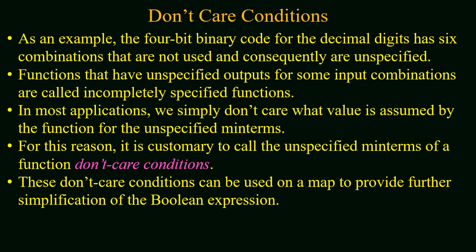As an example, consider a 4-bit binary code for decimal digits. We have 10 decimal digits from 0 to 9, and for this we use a 4-bit binary code. All possible combinations with a 4-bit binary code are 16, whereas decimal digits are only 10, so we have 6 combinations that are not used and consequently are unspecified.